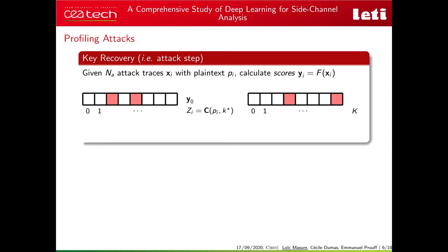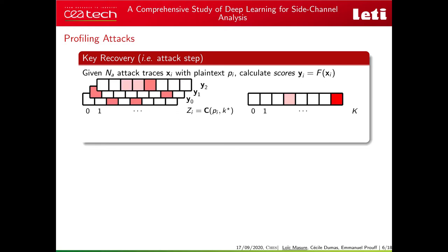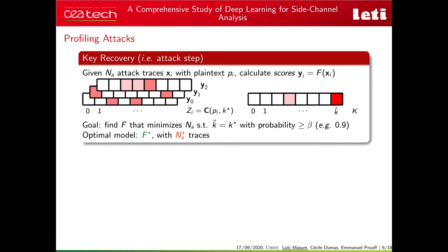During the attack phase, key recovery is done via a distinguisher. We have a model F that returns for each trace a score vector — one score for each hypothetical value of the sensitive variable Z, or equivalently, one score per hypothetical value of the secret key K. By combining scores across attack traces, one score emerges as our key hypothesis. Our goal is to find the model minimizing the number of traces such that the key hypothesis equals the real key with probability above a given threshold, typically 90%. We denote by F* the optimal model and NA* the corresponding number of traces.